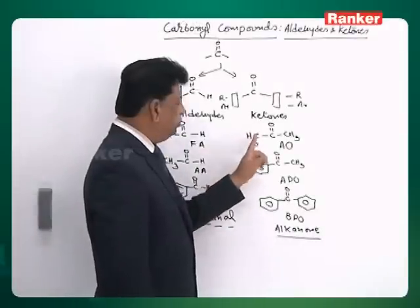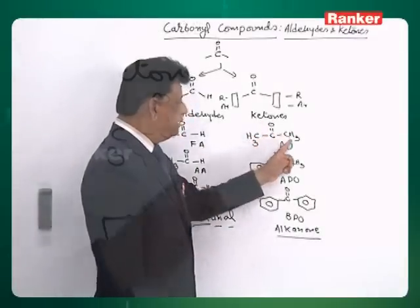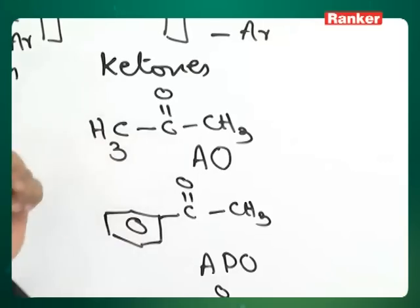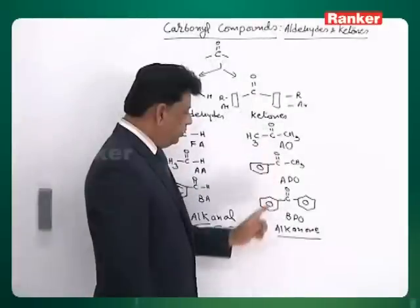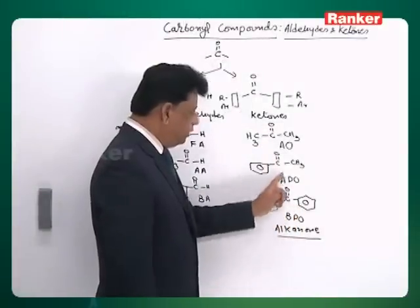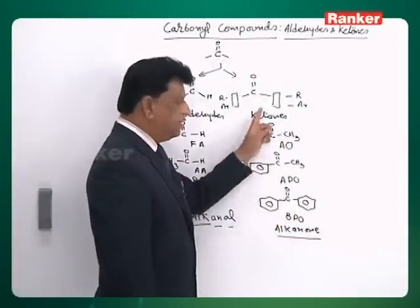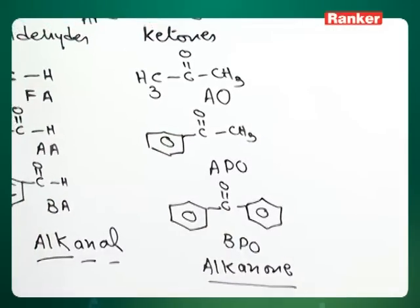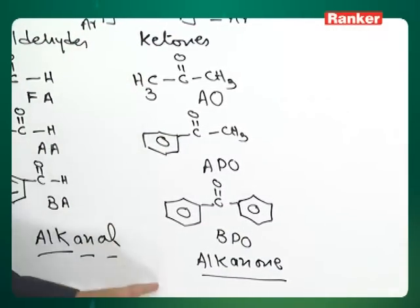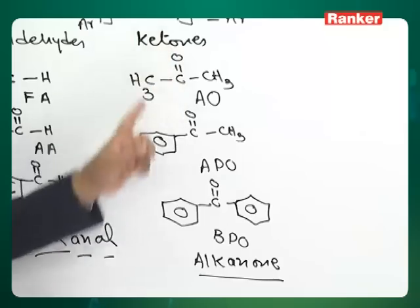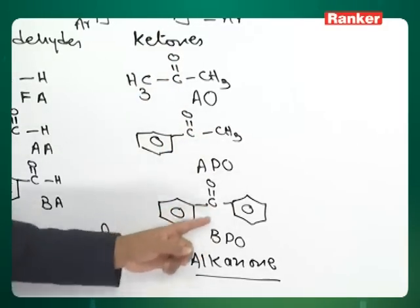In ketones, you can name the two radicals and then say 'ketone' — this is called the radicofunctional method. So dimethylketone for acetone, methylphenylketone for acetophenone, and diphenylketone for benzophenone. These are the radicofunctional names of the three ketones.